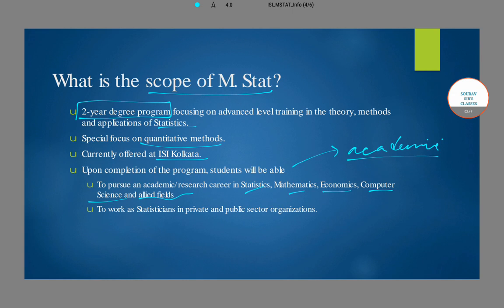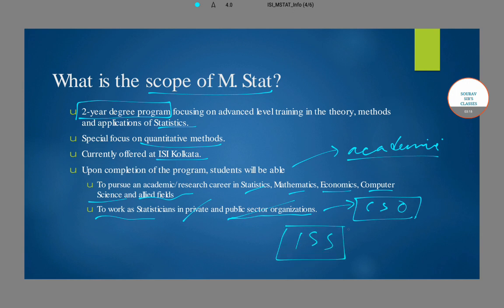Apart from academics, most graduates also go on to work as statisticians in private and public sector organizations. In the public sector, there is the Central Statistical Organisation, or CSO. Prospective graduates from the MSTAT program can go for this institute, and there is also the ISS program, which is the Indian Statistical Service. You can appear for the ISS exam, which is conducted by the UPSC, and get into that service as well.